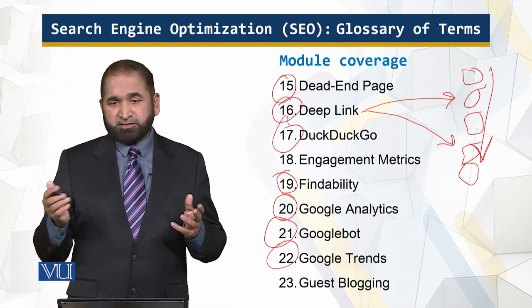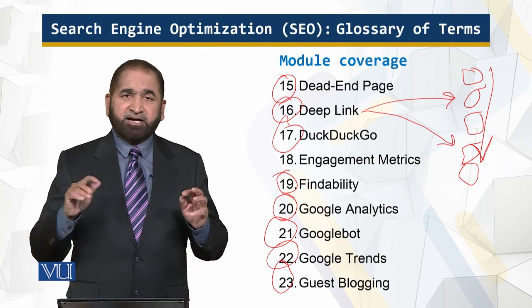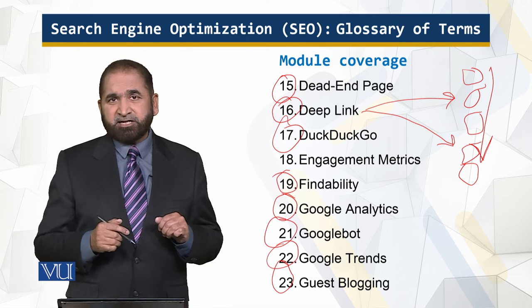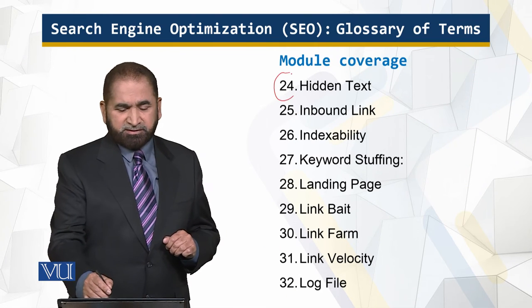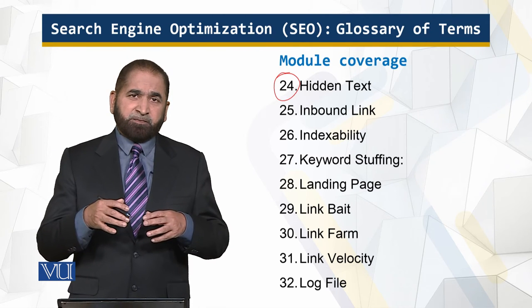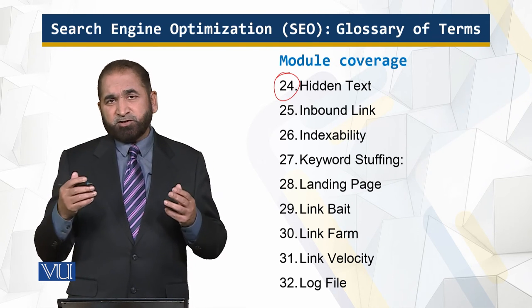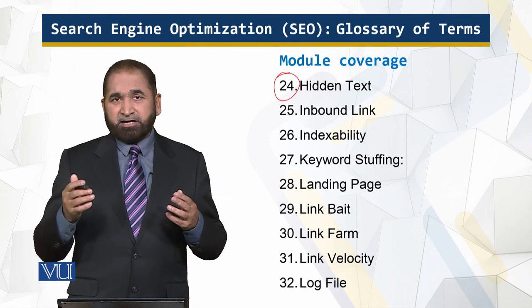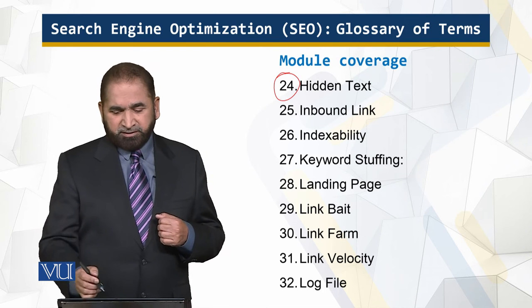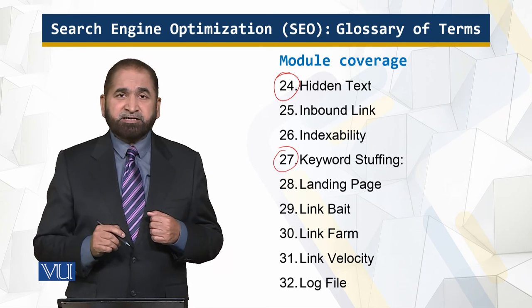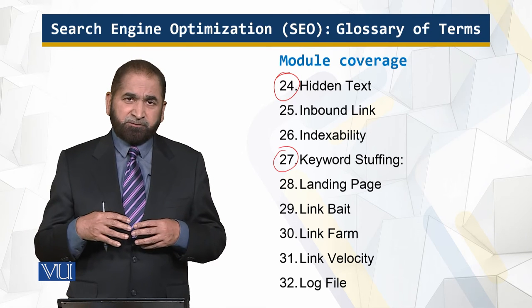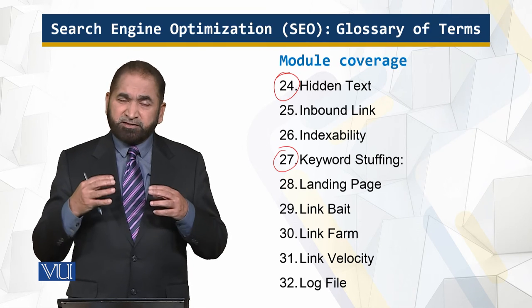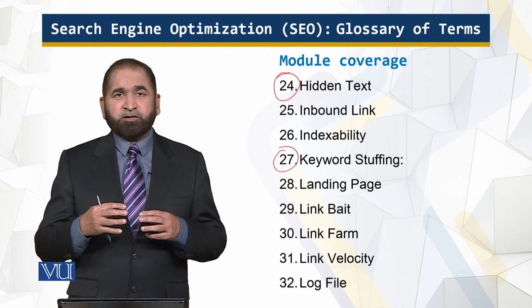Guest blogging is when you write blogs for another site and they in turn link back to your page — this is not desired by Google. Hidden text is placing lots of text in your web page that is not visible to visitors, hoping to gain a high ranking. Keyword stuffing is similar — putting lots of keywords in hopes of a high position in search results, even if those keywords have nothing to do with the actual contents of your page. Both are not desired by Google.